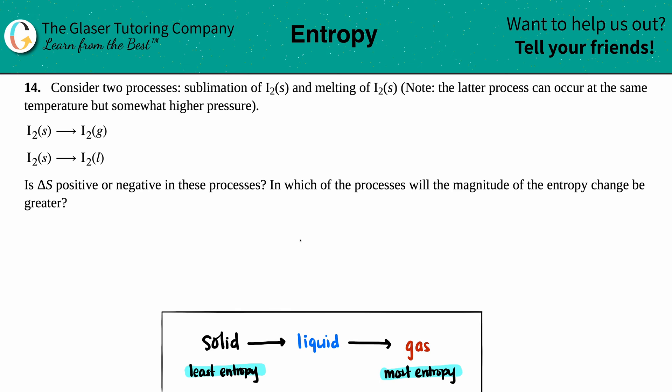Number 14: Consider two processes: sublimation of I₂ solid and melting of I₂ solid. Note the latter process can occur at the same temperature with somewhat higher pressure. They give us these two examples: sublimation of I₂ solid.